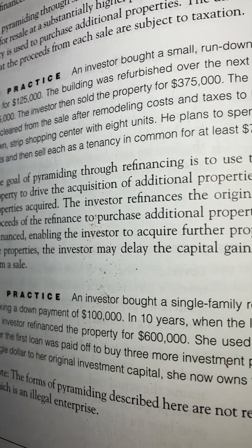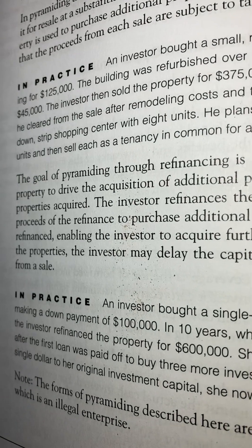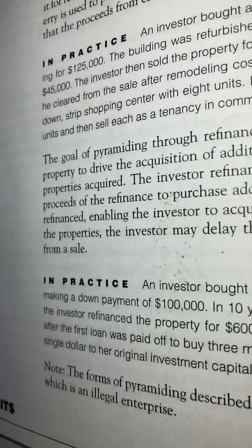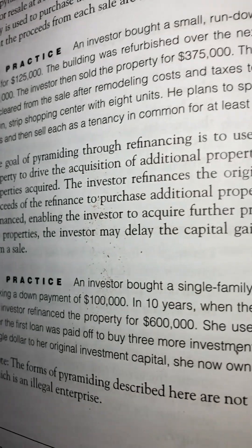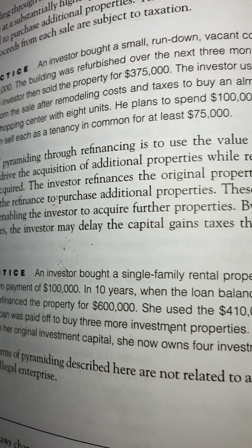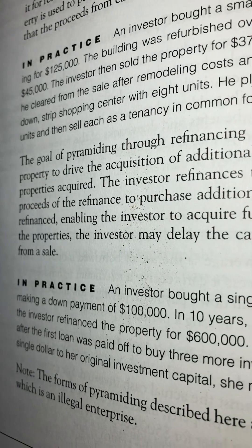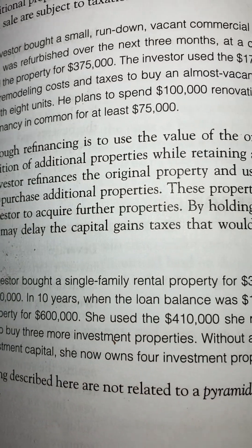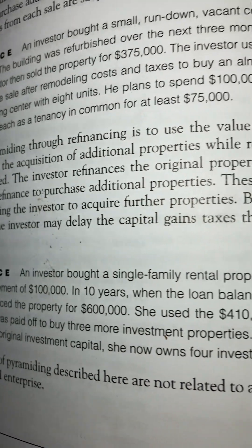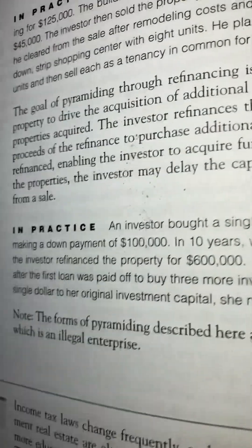The goal of pyramiding through refinancing is to use the value of the original property to drive the acquisition of additional properties while retaining all the properties acquired. The investor refinances the original property and uses the proceeds of the refinance to purchase additional properties. These properties are then refinanced, enabling the investor to acquire further properties. By holding on to the properties, the investor may delay the capital gains taxes that would result from a sale.